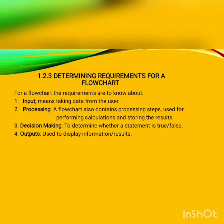There are a few requirements for drawing a flowchart. In a flowchart we use input, output, decision making, and processing. The first requirement is input — input means taking data from the user. It is very important to know how many and what type of inputs are required. The second requirement is processing. A flowchart also contains processing steps, which are used for performing calculations and storing the results of calculations.